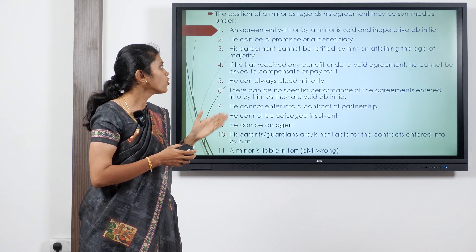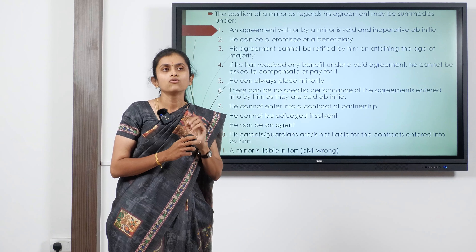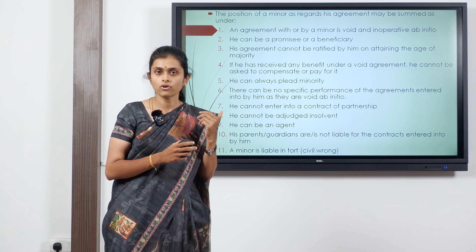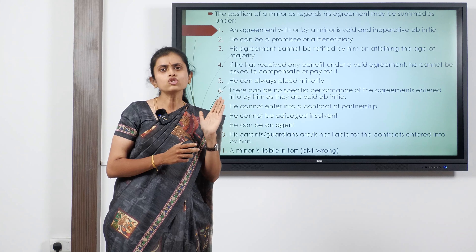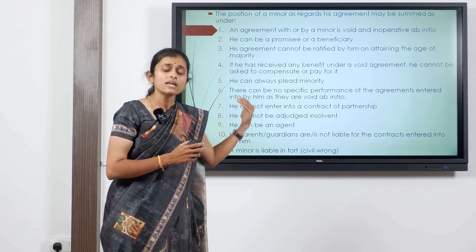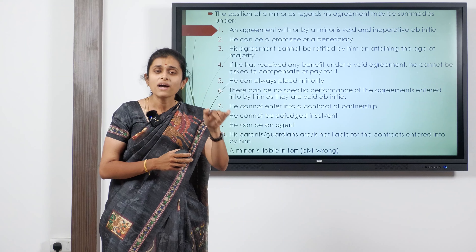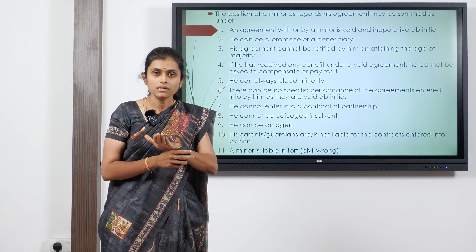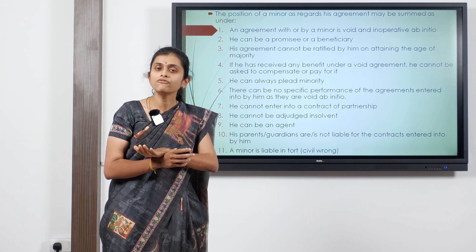Third, a minor's agreement cannot be ratified by him on attaining the age of majority. For example, if Mr. X, a minor of 15 years, takes a loan of 10,000 rupees from Mr. Y and writes a promissory note — Y cannot sue X if he fails to repay. Subsequently, when X turns 18 and writes another promissory note to Y, that contract is also void because there is no consideration; past consideration cannot be compensated for this promissory note.